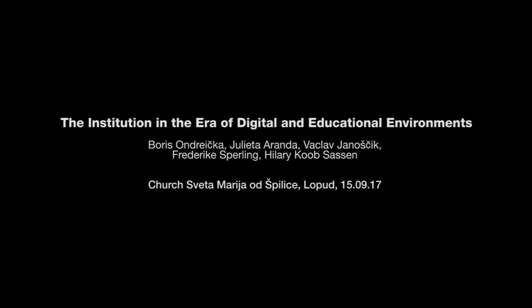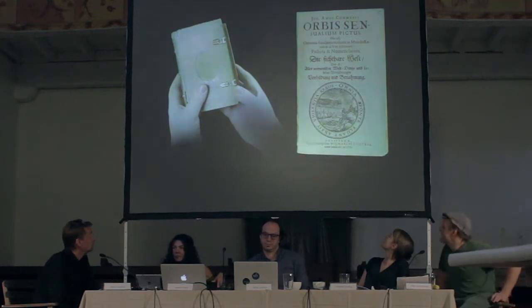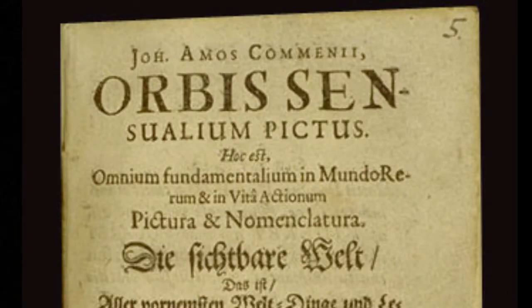Welcome to the second panel of this marathon. I could not resist my personal affiliation to a certain retro-futurist approach, and I want to show you the first multimedia school book for kids. It's called Orbis Sensualum Pictus — Visible World in Pictures — by a phenomenal thinker of possibly Slovak origin, Jan Amos Komenius, who was later called the Teacher of Nations.